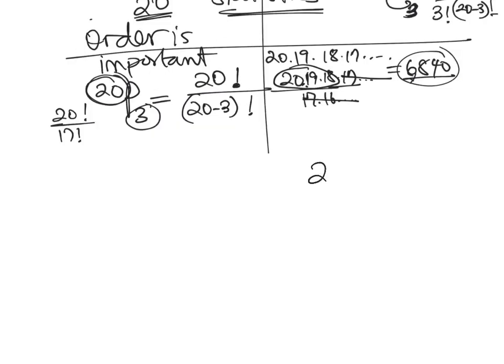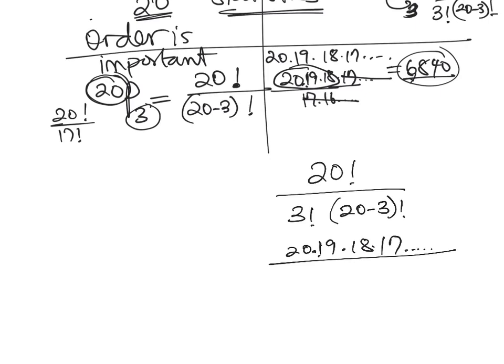If you have 20 combination 3, then you would say 20 factorial divided by 3 factorial times 20 minus 3 factorial. So that becomes 20 factorial or 20 times 19 times 18 times 17 divided by 3 factorial, which is 3 times 2 times 1, and then 17 factorial. So the 17 factorial will cancel 17 to the end.